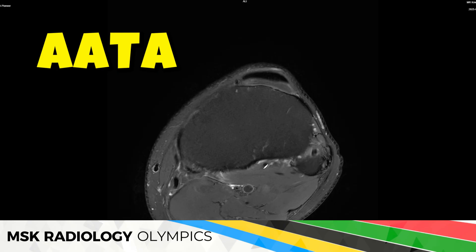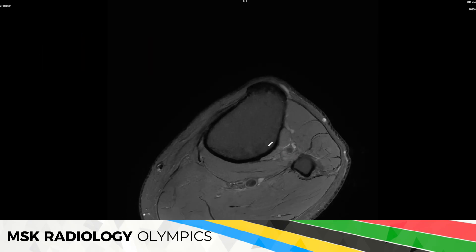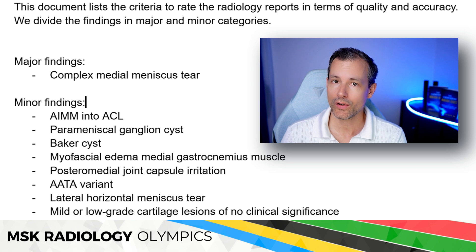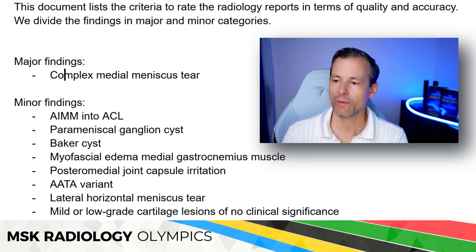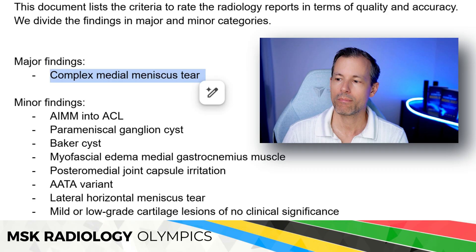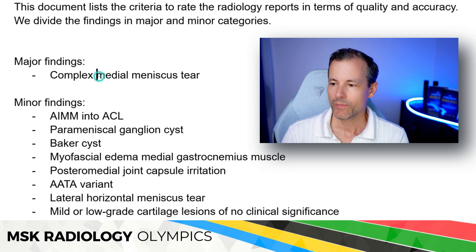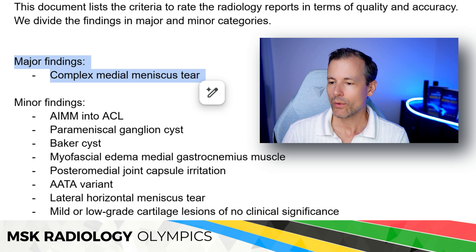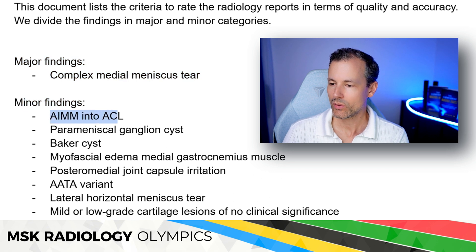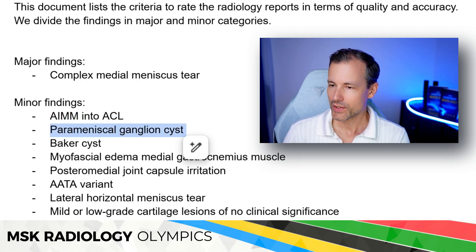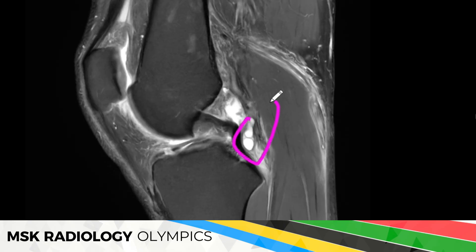The last thing to check is the aberrant course of the anterior tibial artery with a high origin from the popliteal artery and an aberrant course between the popliteus muscle — this was only detected by a few participants. Here you can see the criteria the judges used. The major finding required for qualification was the complex medial meniscal tear. Any paraphrasing was acceptable, as was describing two components of a tear, but if people just wrote 'horizontal tear' they were disqualified. Every qualifying report was then allocated points for minor findings, including AIMM into ACL — which nobody described, which makes sense in a speed-reporting competition.